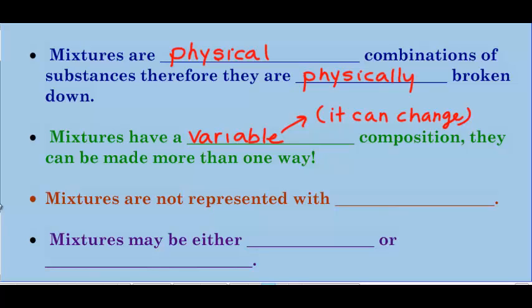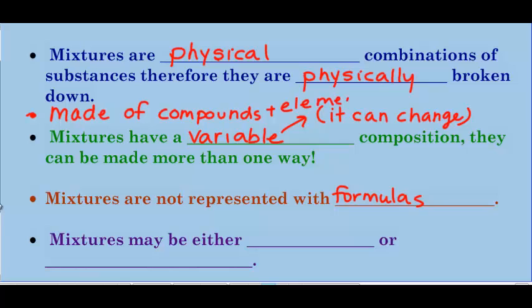Mixtures do not have formulas. They cannot be represented with symbols or formulas. We said mixtures are physical combinations of substances. Mixtures can be made of either, they are made of either compounds or elements or both. But they're compounds and elements physically combined. So they're just chilling out in the same container. They do not react.